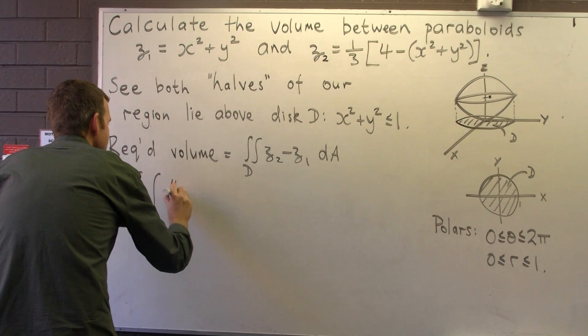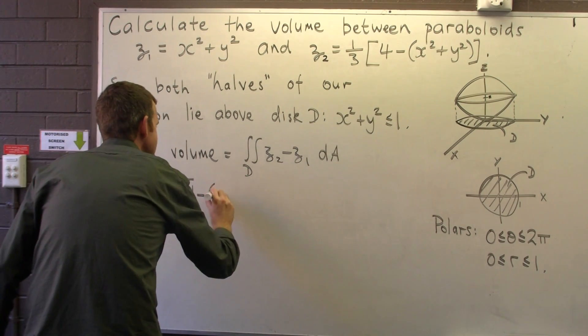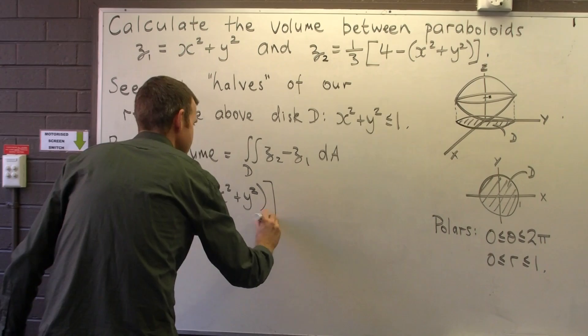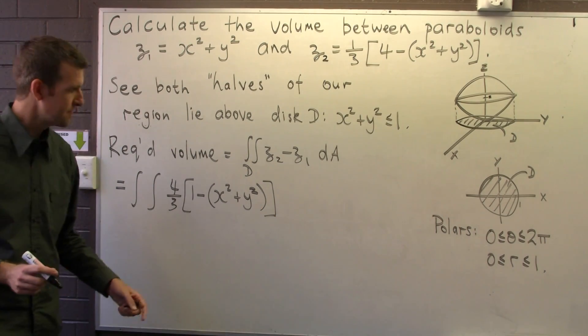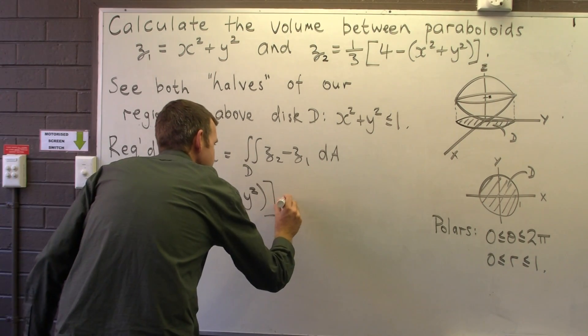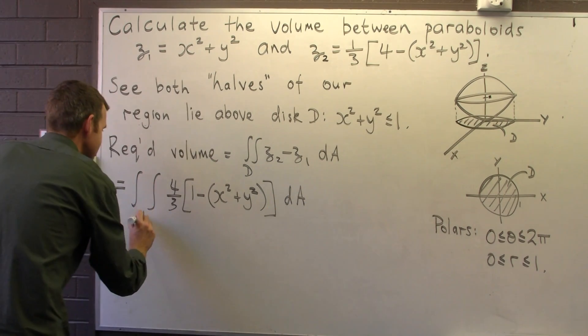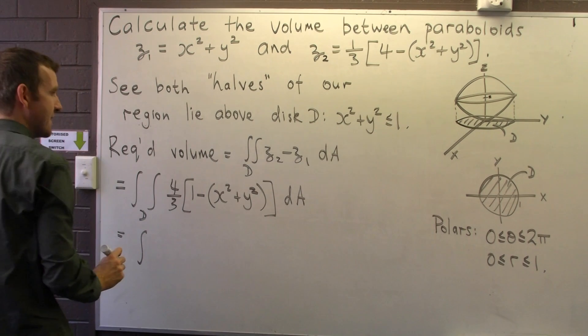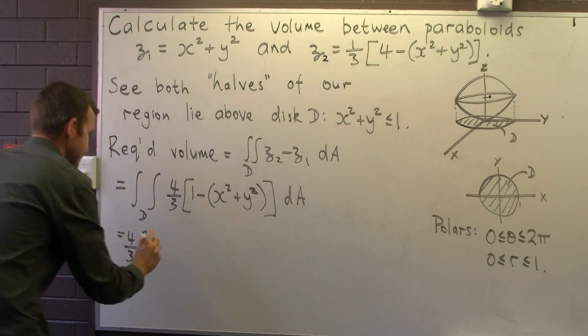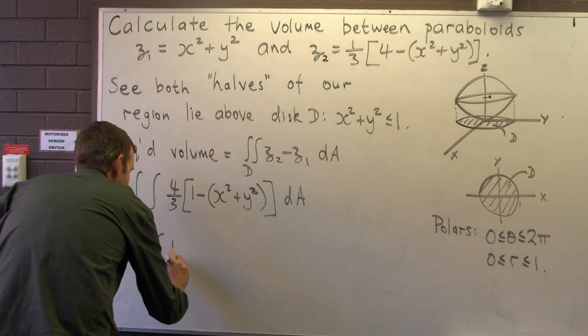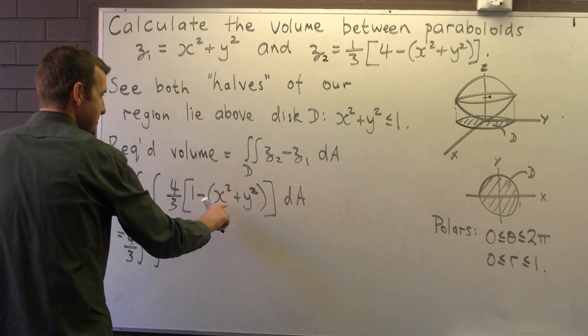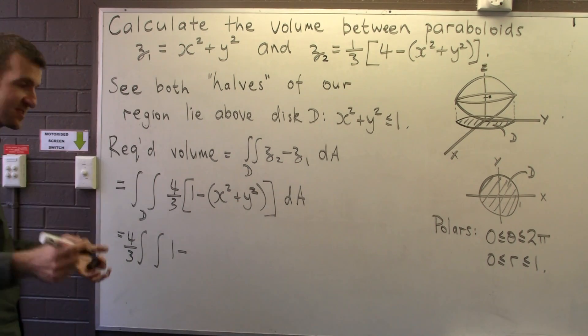We get 4 on 3, 1 minus x squared minus y squared. Now to put this all into polars we replace dA with r dr dθ. We're about to do that in the next line. So 4 on 3 can come out the front. Changing over to polars, dA goes to r dr dθ and I replace x with r cos θ and y with r sin θ.